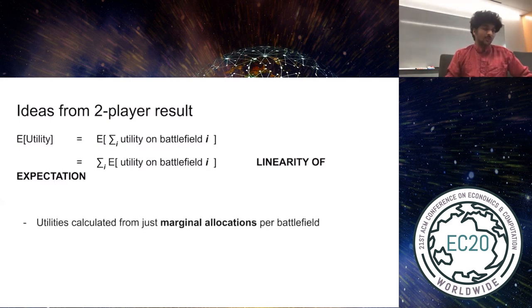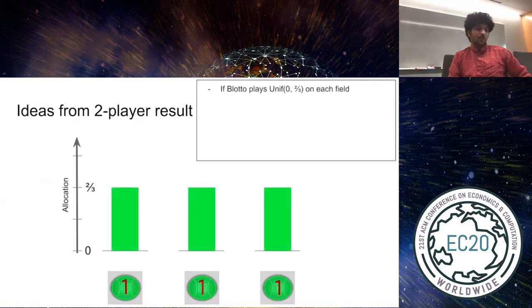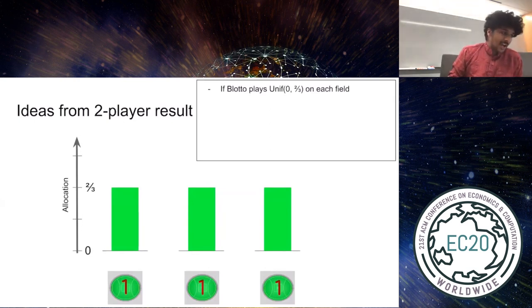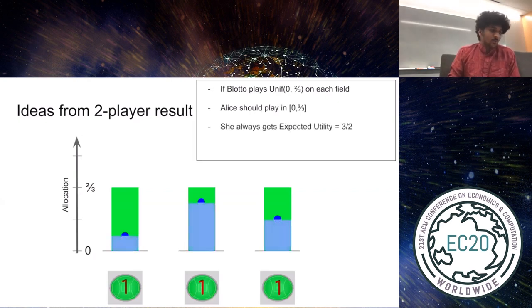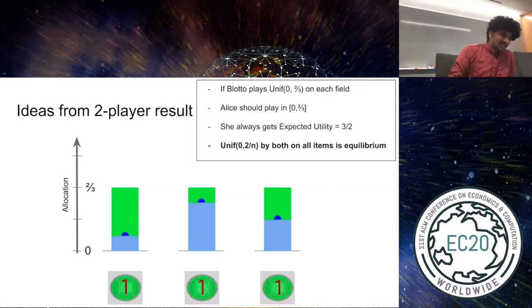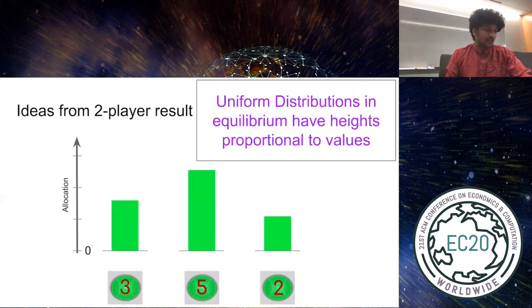Now let me present an equilibrium of the two-player game to you. Consider what happens if Blotto plays uniformly between zero and two-thirds on every battlefield. In fact, now it's clear that Alice should also play in the range zero to two-thirds, as there's no benefit of outplaying Blotto by too much. And in fact, regardless of what pure strategy she plays in this range, she'll win half the utility in expectation. Thus, we see that each player playing uniform in zero to two-thirds on each battlefield is an equilibrium. In fact, the same reasoning extends to n battlefields, and if the battlefields have different values, it suffices to ensure that the heights of the uniform distributions are proportional to the values of the battlefields.